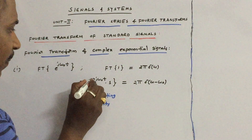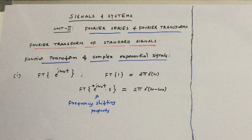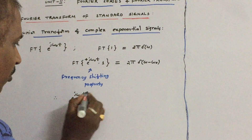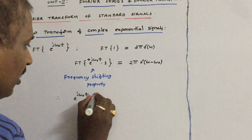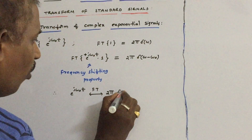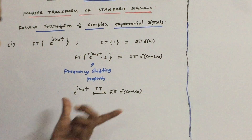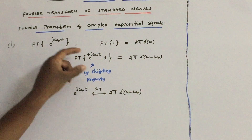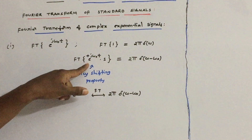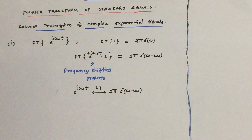Just remember: if there is a plus sign in the exponent, replace with minus in the delta argument; if minus, replace with plus. So this is the very important result — the Fourier transform of e^(jω₀t) is 2π·δ(ω−ω₀). Just use the frequency shifting property when the signal is multiplied with a complex exponential.